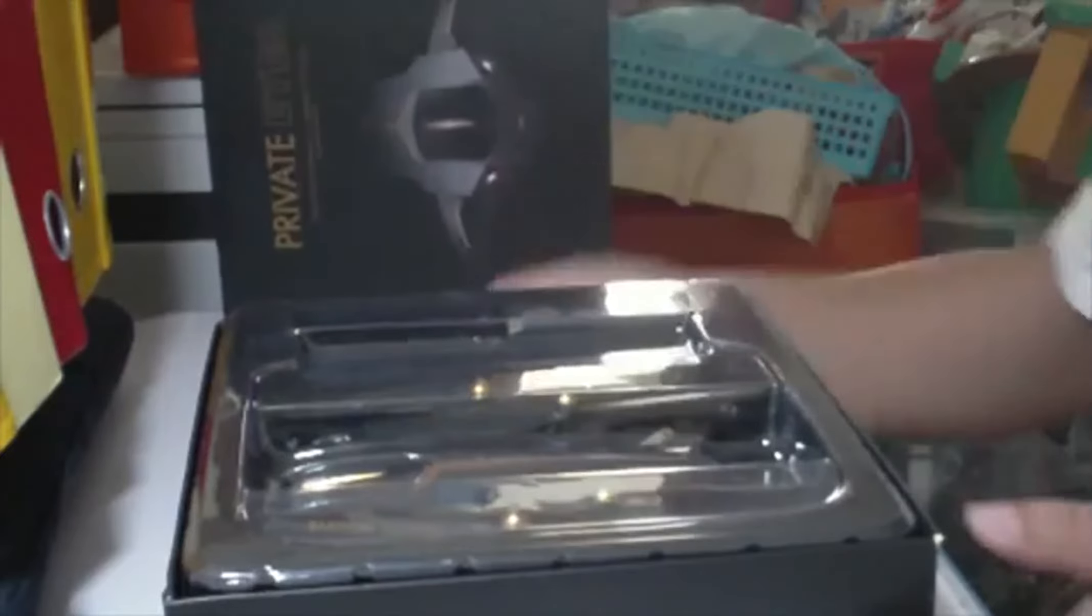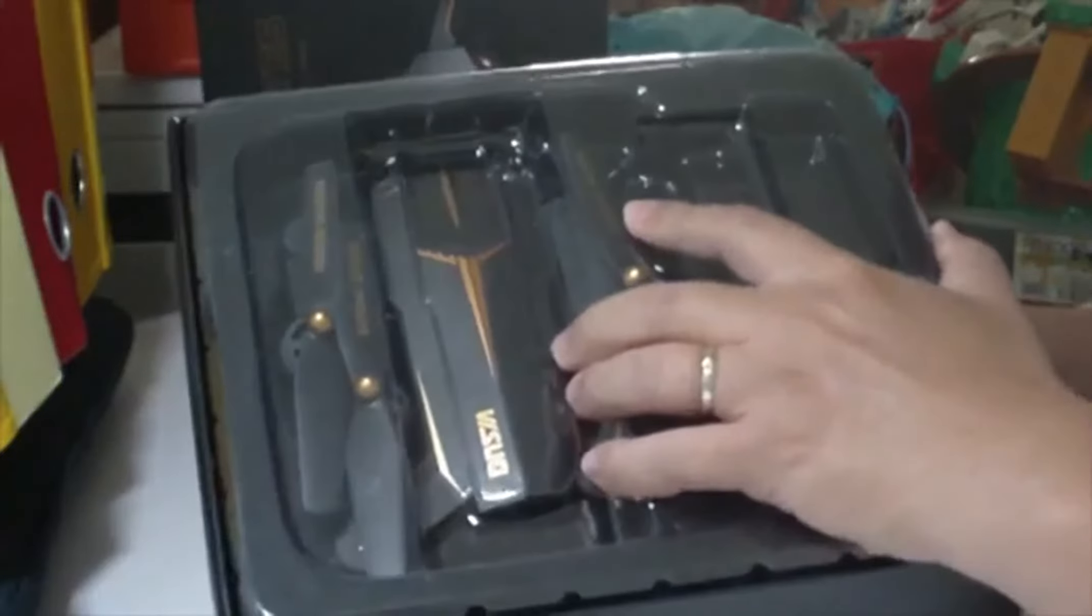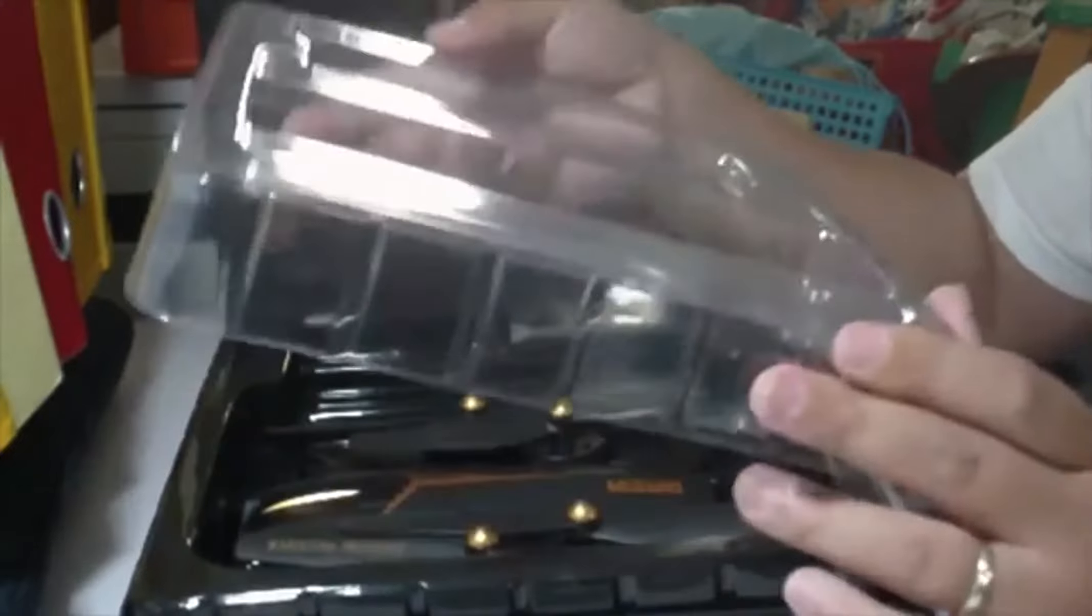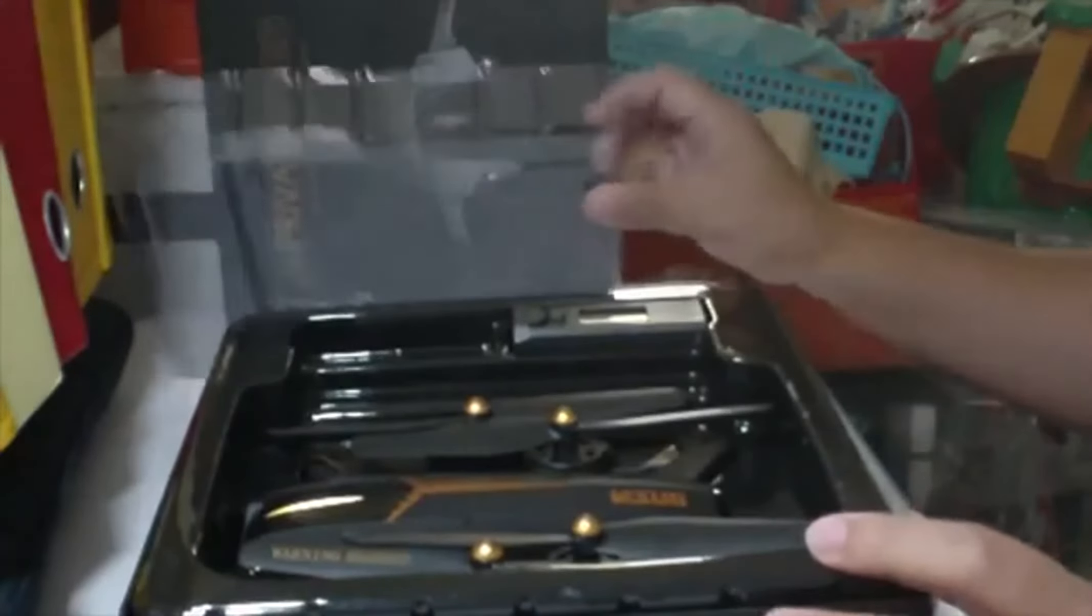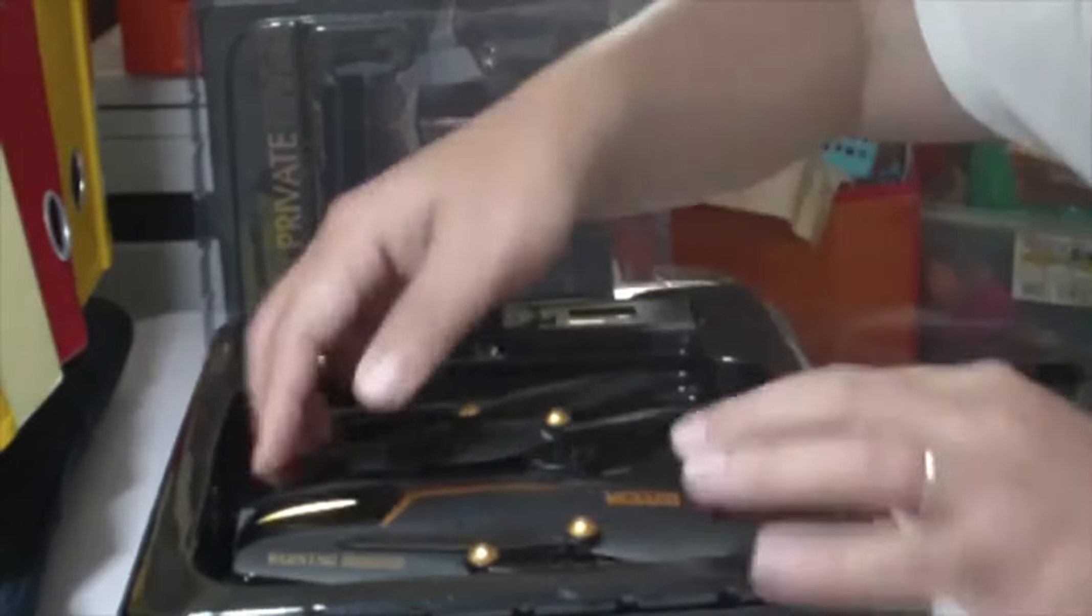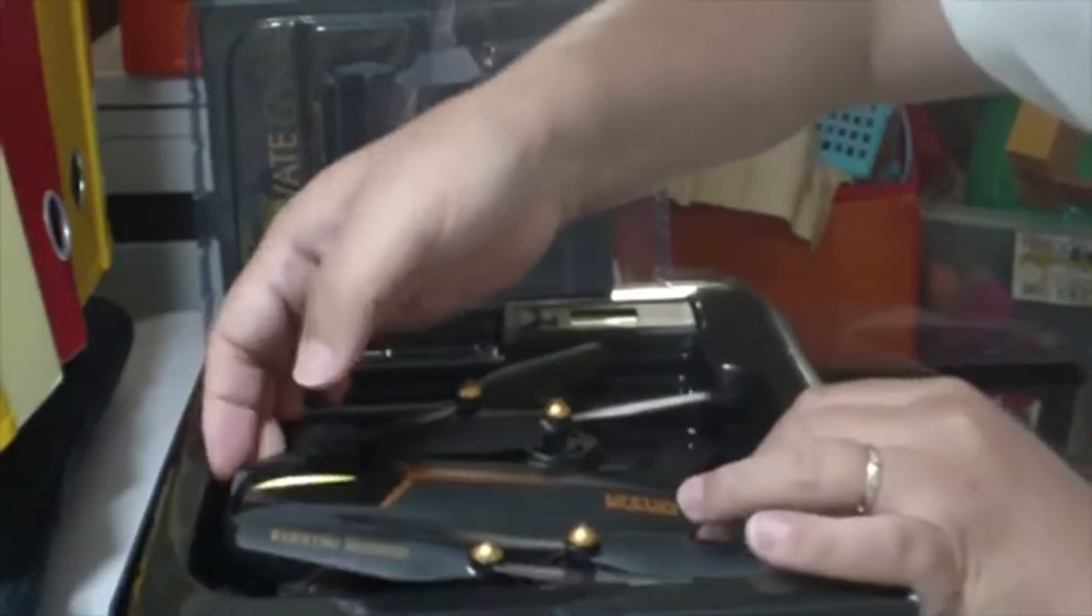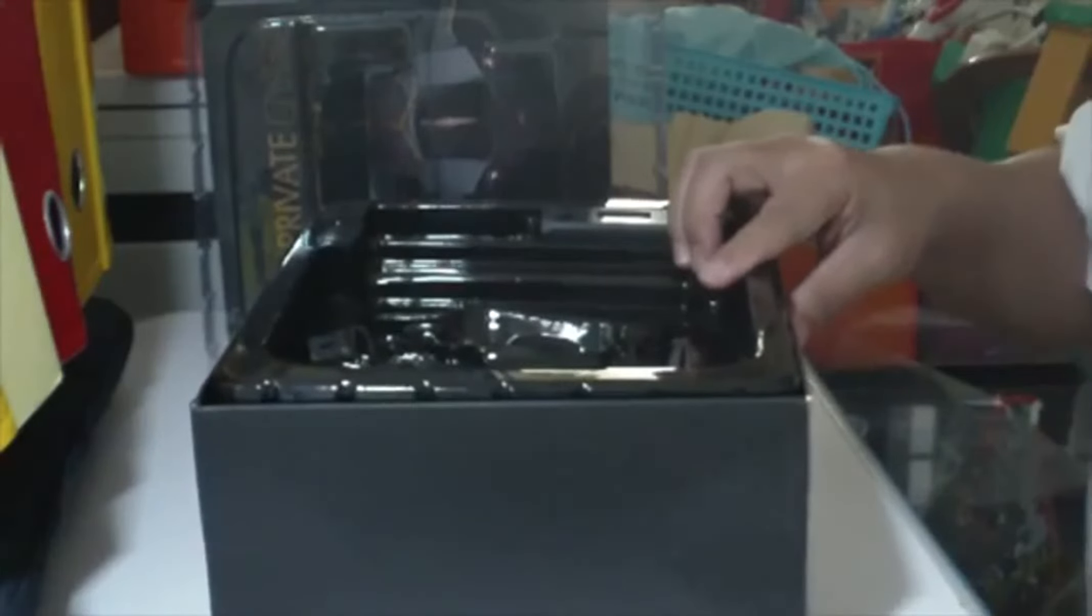I shall now open up the box. You can see it has a plastic covering that protects the quadcopter. There you see the quadcopter in the box.